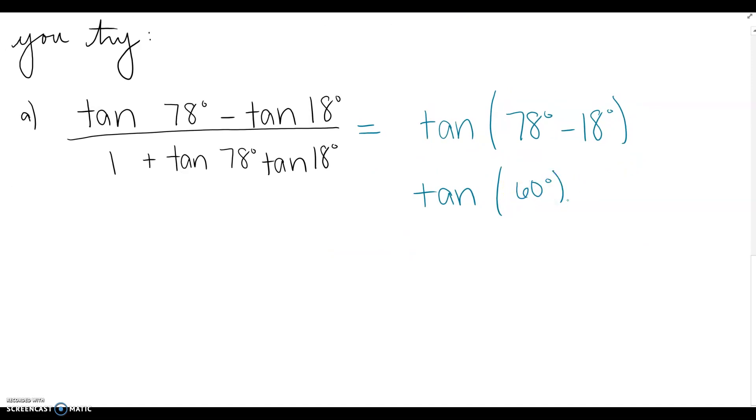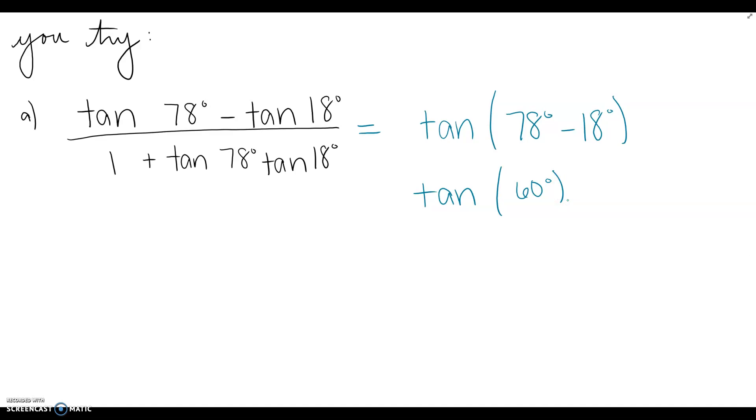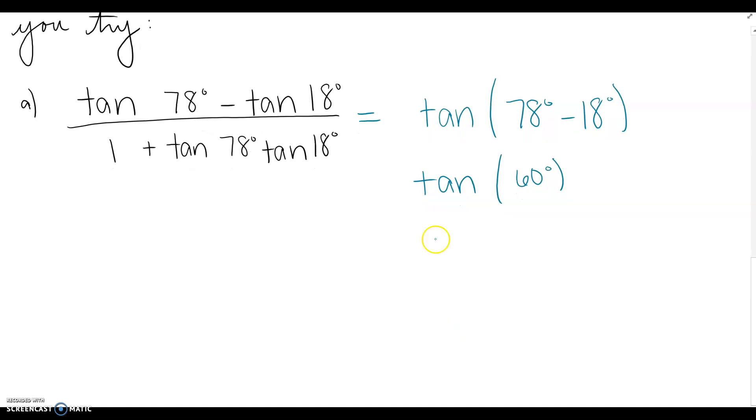Because 60 degrees is on the unit circle, we can go further with this. What is tangent of 60 degrees? First quadrant. Hopefully you remember. Square root of 3. We are done.